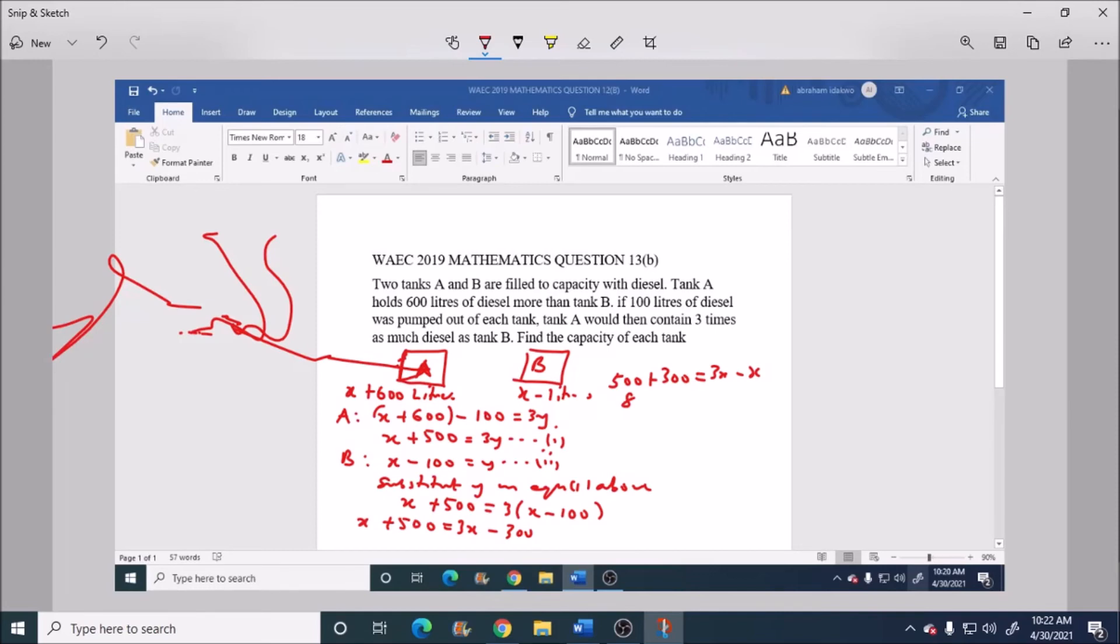The capacity of tank A is equal to 400 plus 600, which is equal to 1000 liters.